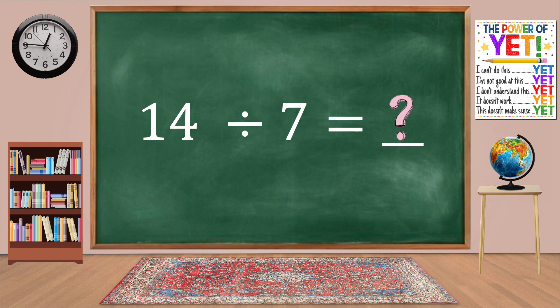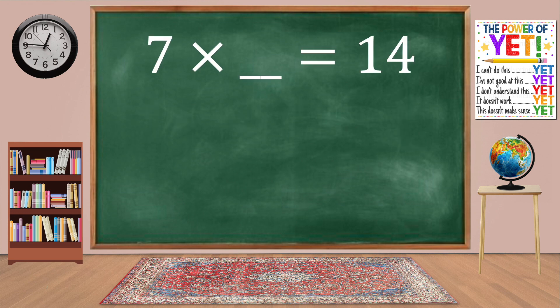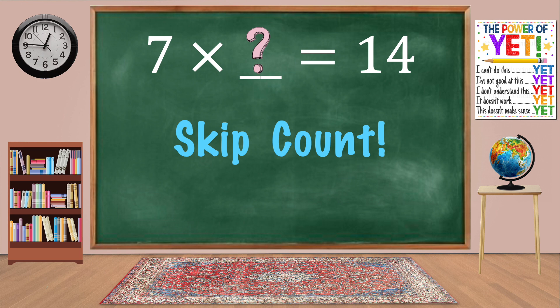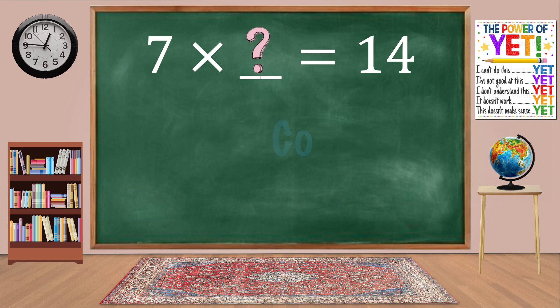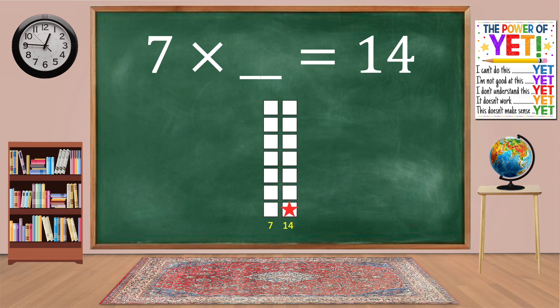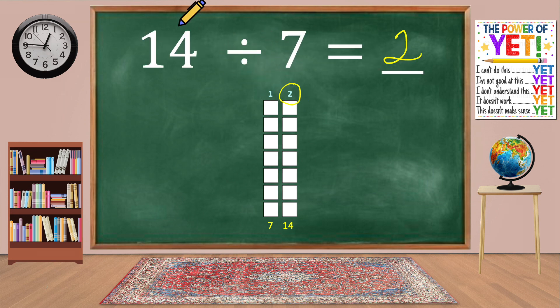Fourteen divided by seven equals blank. Our related fact is seven times what equals fourteen? Skip count: 7, 14. We have two columns. Seven times two equals fourteen. Fourteen divided by seven equals two.